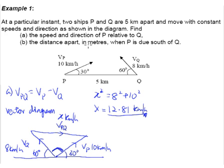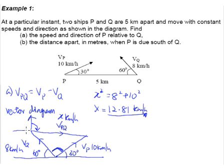Next we have to find the direction, which refers to the bearing of the VPQ vector. We go to the tail of the arrow, draw a north line, and the bearing is given by that angle. To find this angle, we draw a horizontal line and note that it creates a 90-degree portion. If we find this small blue angle and add 90 degrees, we get the bearing. By drawing two parallel horizontal lines, we see that the blue angle at the top is an alternate angle equal to the blue angle at the bottom.